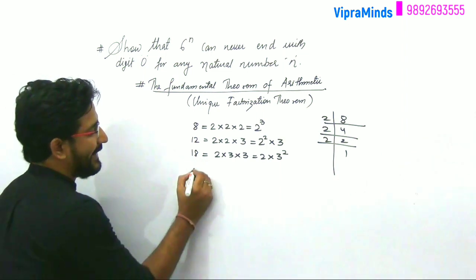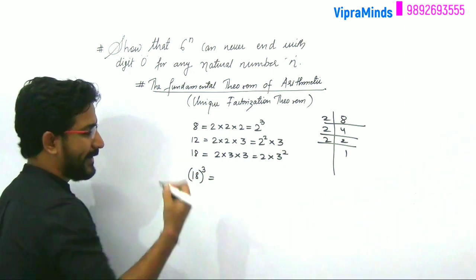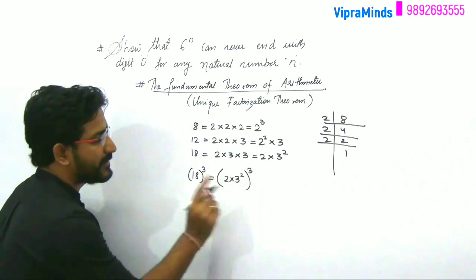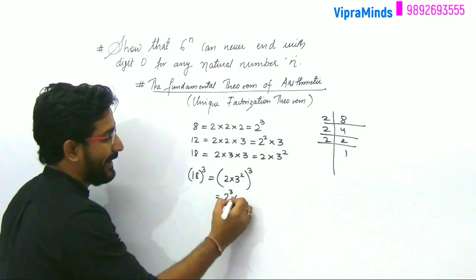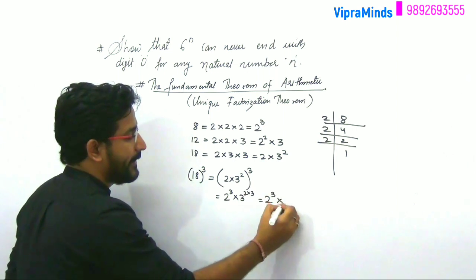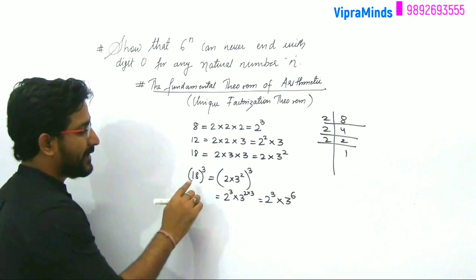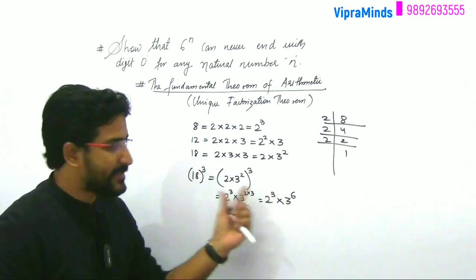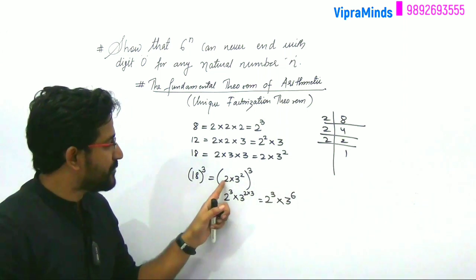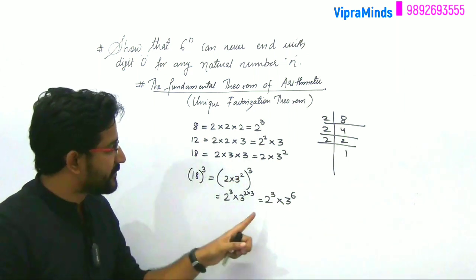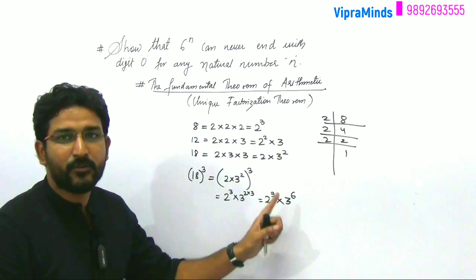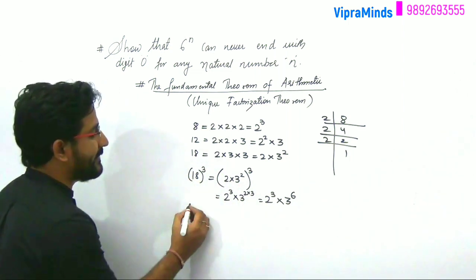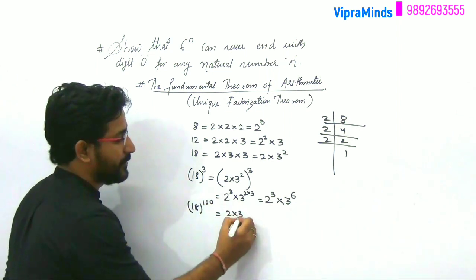Now look — if we take any power of 18, say 18 raised to 3: since 18 = 2 into 3 squared, raising to the power 3 gives 2 cubed into 3 raised to 6. That means even for 18 cubed, the prime factors are still 2 and 3 — just 2 cubed and 3 raised to 6.